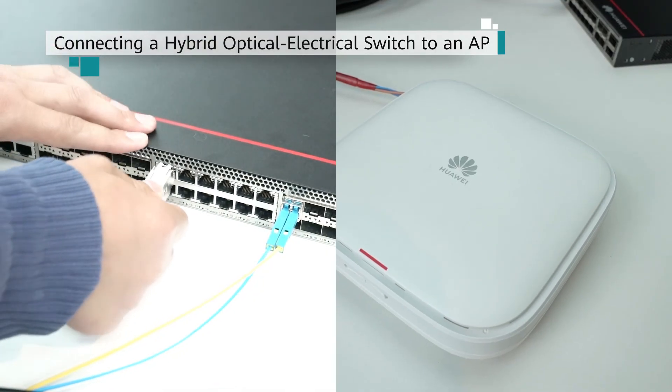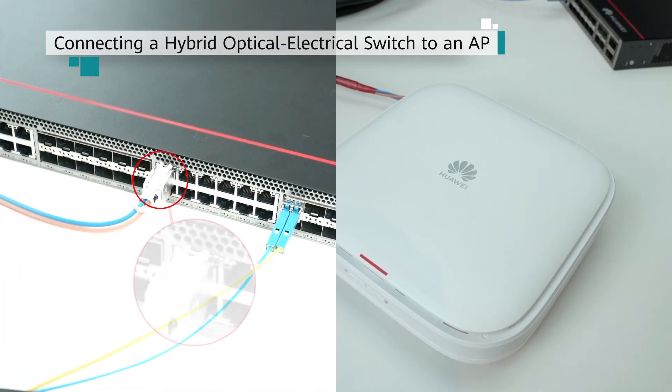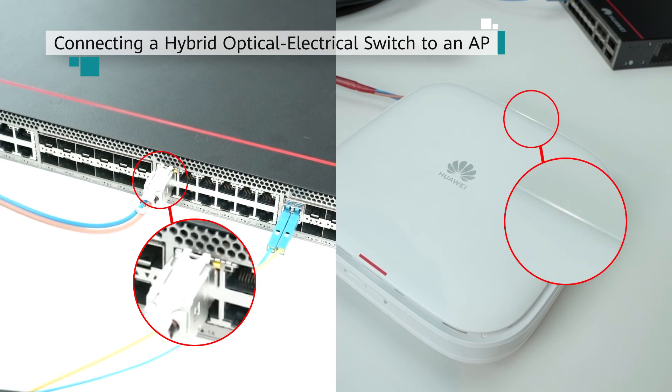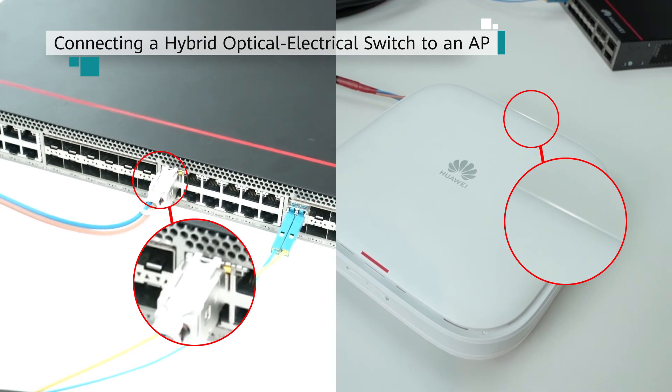Check the indicators. If the indicator on the AP is on after the cable connection is complete, the AP is powered on and can communicate with the switch.